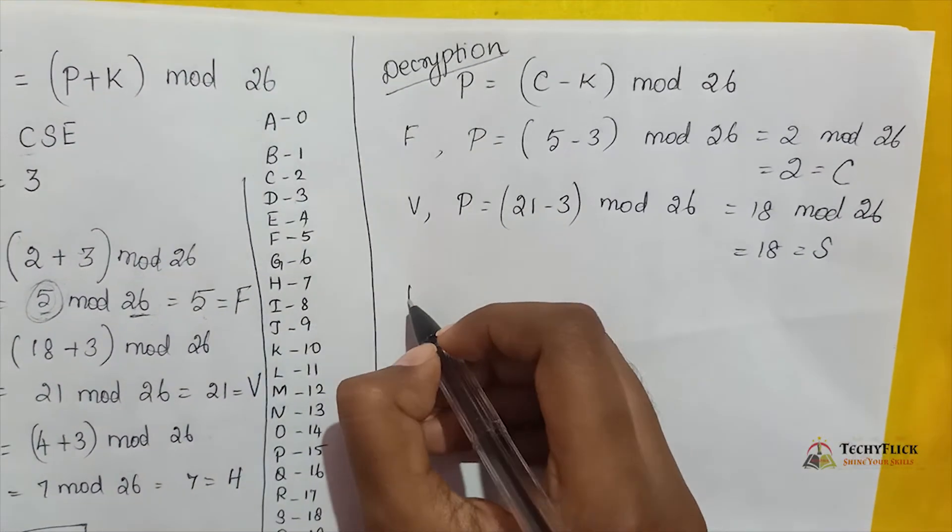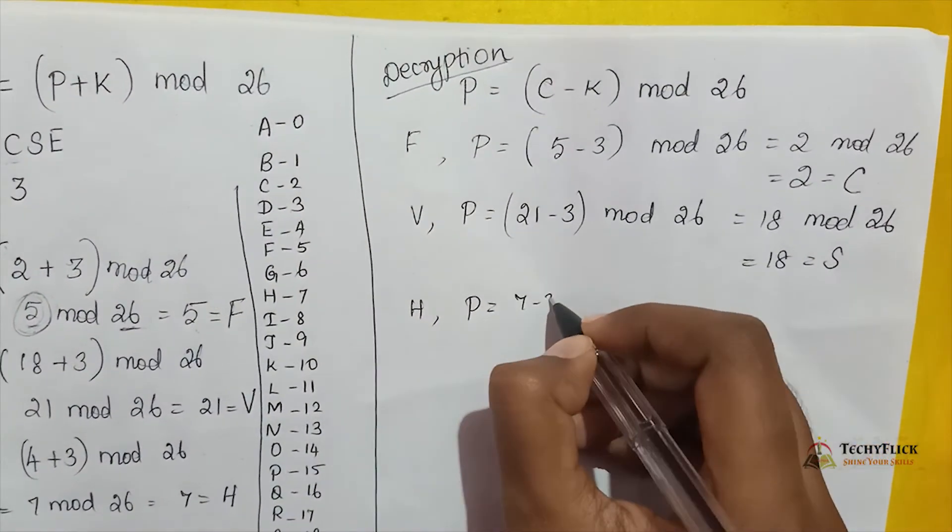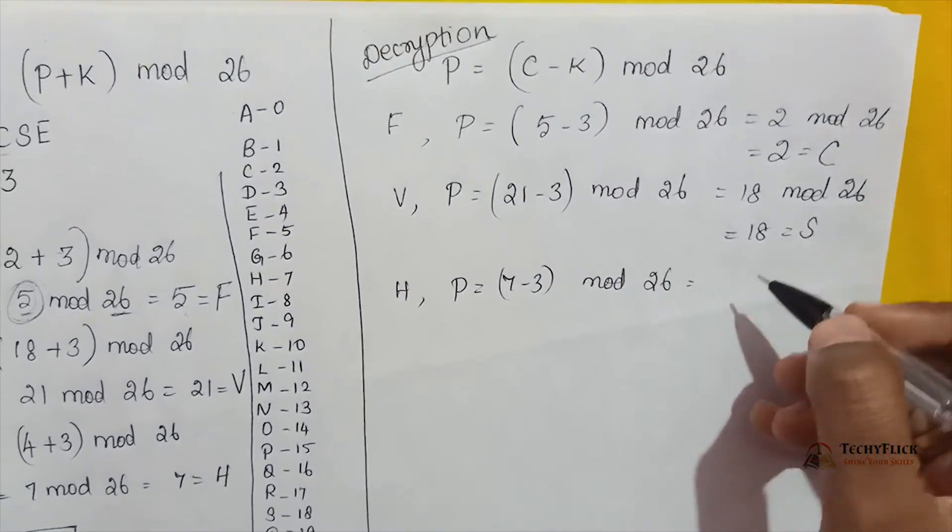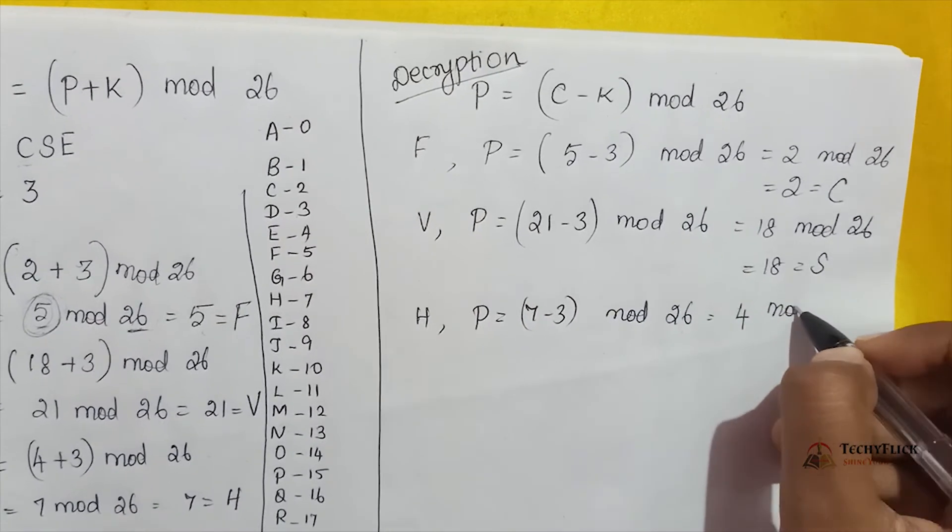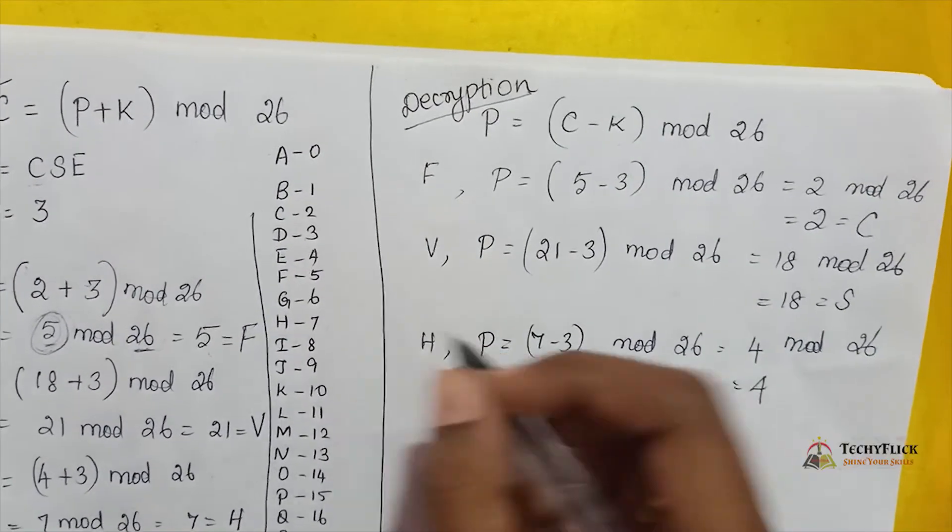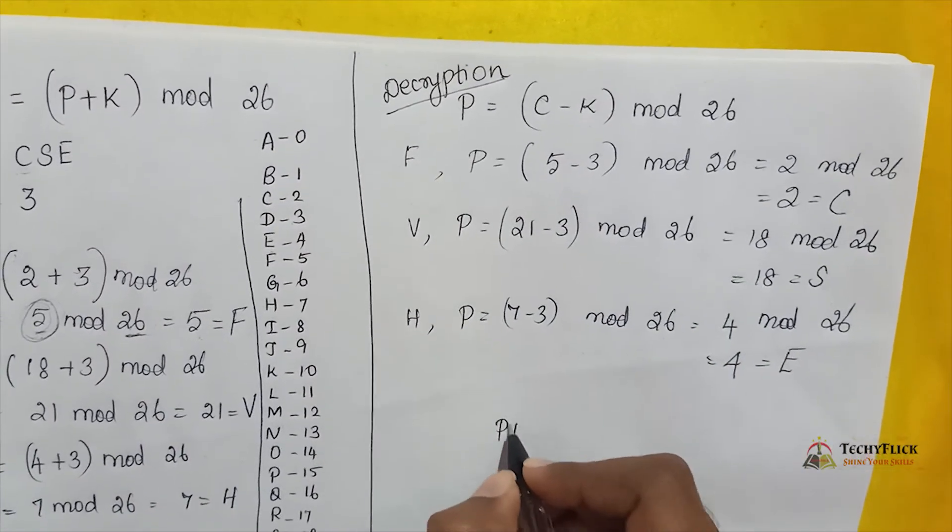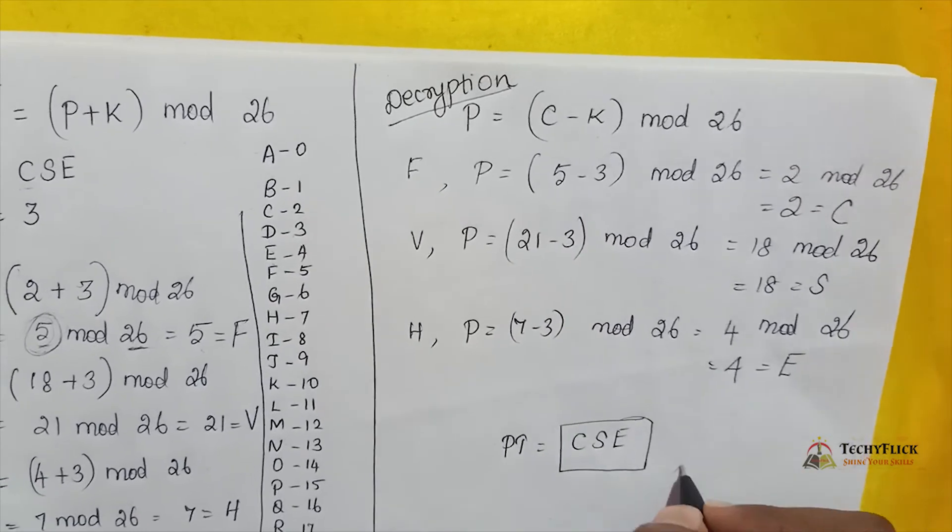Next H. P is equal to H's value which is 7. 7 minus 3 mod 26, so 7 minus 3 is 4, 4 mod 26, so answer is 4. 4's value is E. So now we get the plain text CSE. That's it.